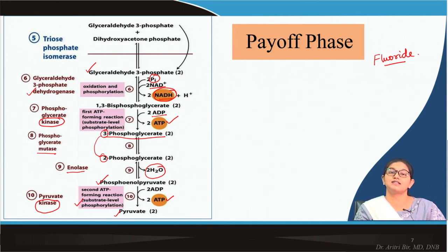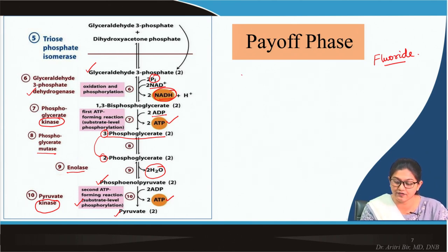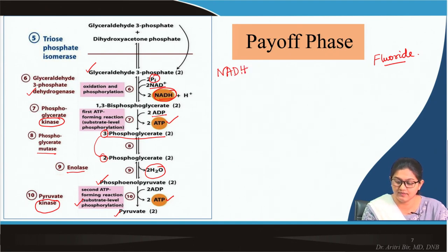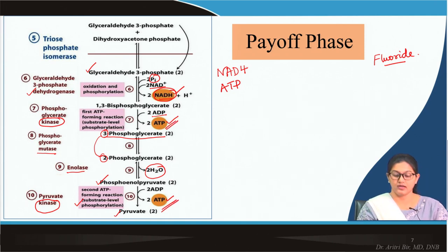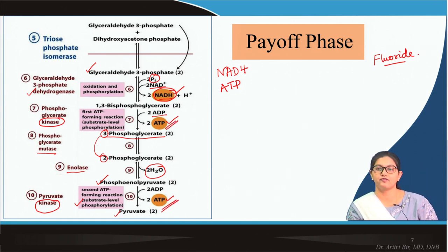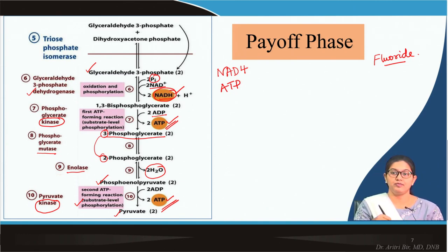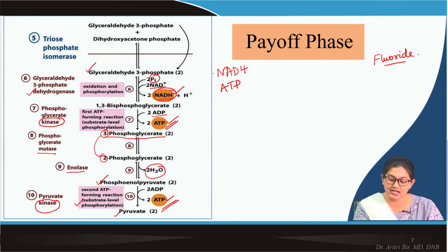Phosphoenolpyruvate then undergoes another substrate-level phosphorylation, forming pyruvate. Because there is substrate-level phosphorylation, ATP is formed from ADP, and the enzyme is pyruvate kinase. This is the payoff phase where we see formation of ATP, NADH, and further ATP from two substrate-level phosphorylation steps, where the stored energy in the intermediates is finally used to produce NADH and ATP.